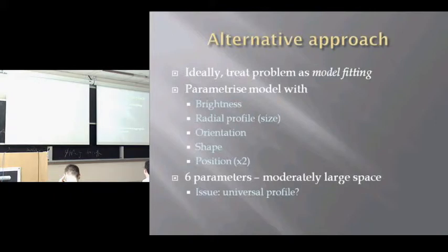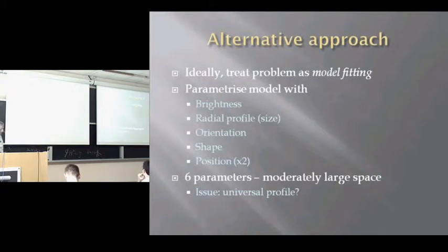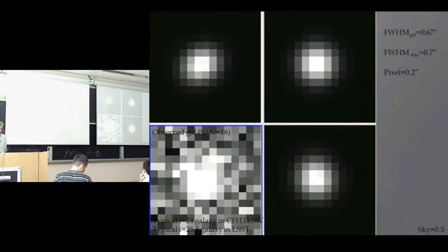The simplest approach is to parameterize a model with six parameters: a central brightness, a size, an orientation, a shape, and a position — about the smallest you can do and still expect useful results. One might want to explore a range of profiles, which introduces additional complexity. Six parameters is already a moderately large space, and with 10 to the 9 galaxies, doing an exploration in that dimensionality is not going to be very fast.